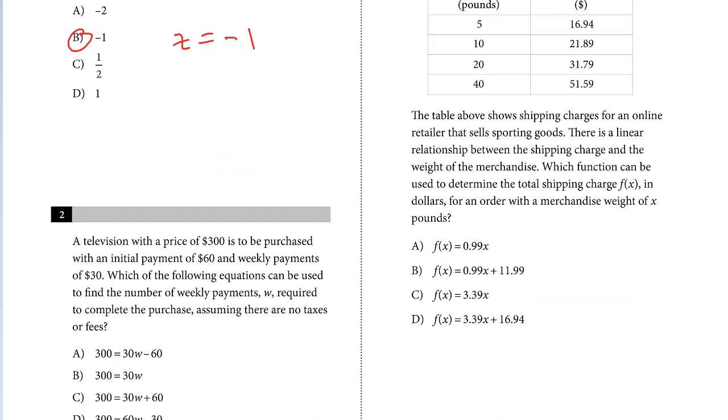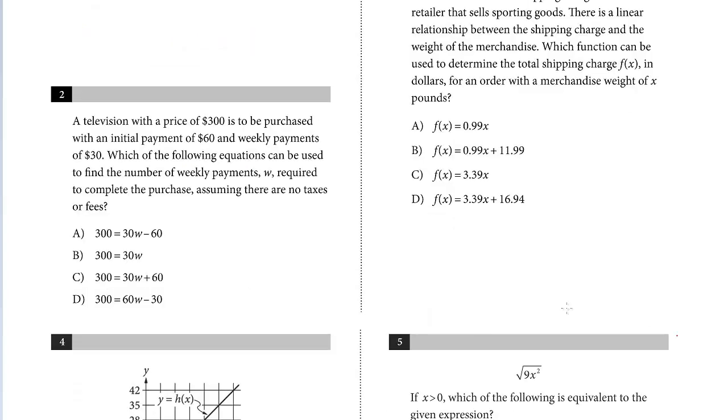Let's take a look at number two. A television with a price of $300 is to be purchased with an initial payment of $60 and weekly payments of $30. Which of the following equations can be used to find the number of weekly payments w required to complete the purchase, assuming there are no taxes or fees?